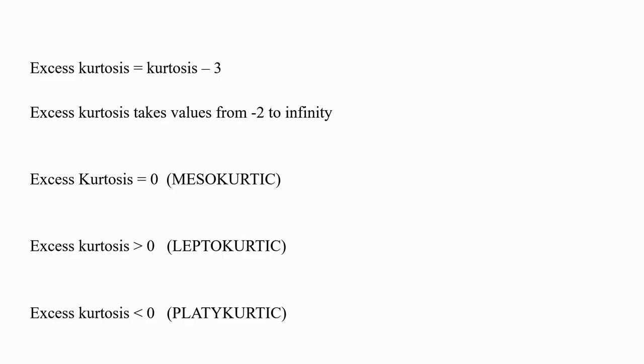Since kurtosis ranges from 1 to infinity, excess kurtosis takes values from minus 2 to infinity. This likely arose from the desire to give the normal distribution a value of 0. So if excess kurtosis equals 0 we have a mesokurtic distribution. If excess kurtosis is greater than 0 we have a leptokurtic distribution with steep center and fatter tails. If excess kurtosis is less than 0 we have a platykurtic distribution with flatter center and shorter tails.